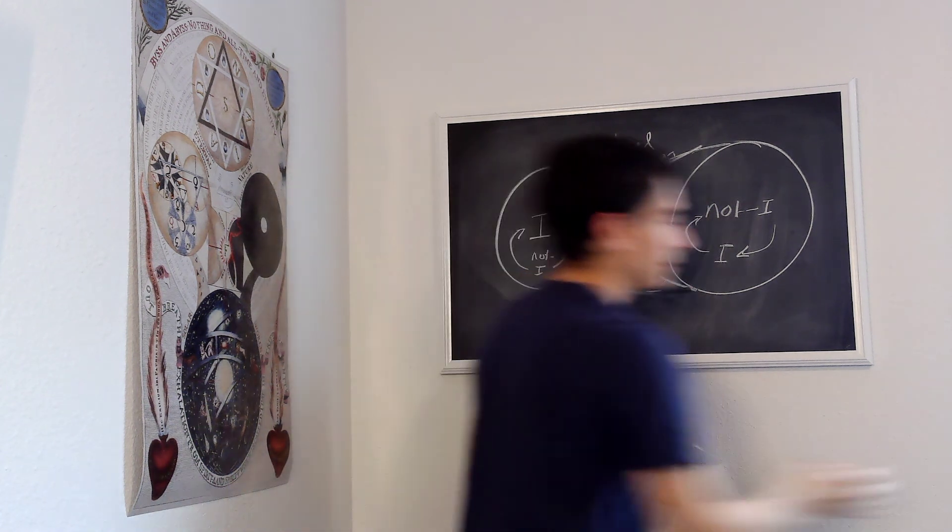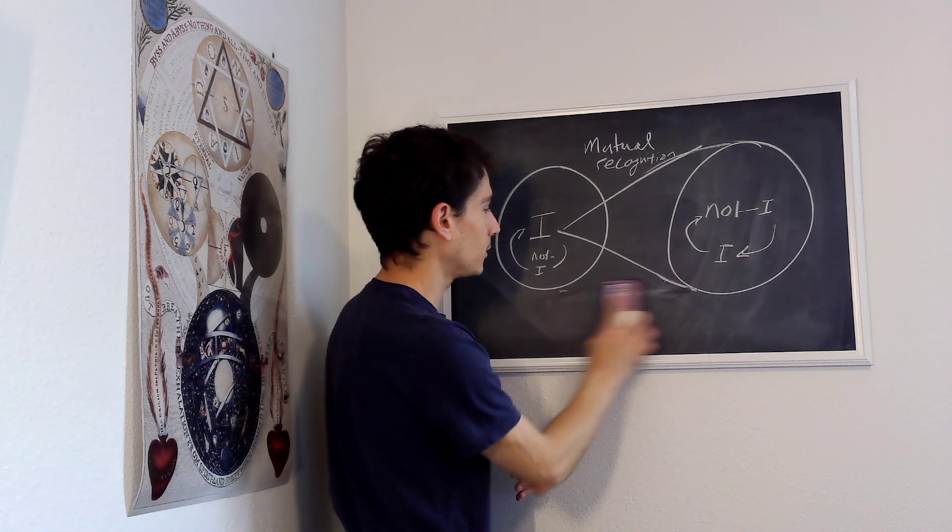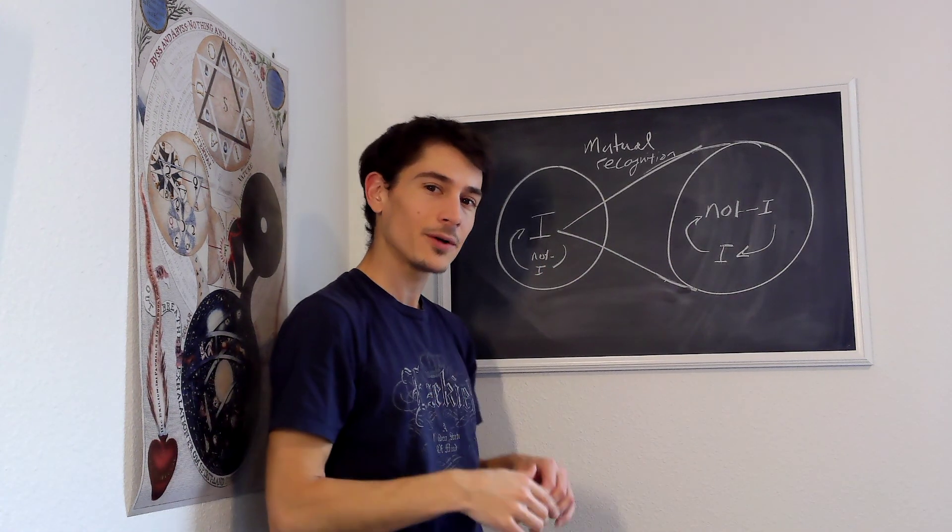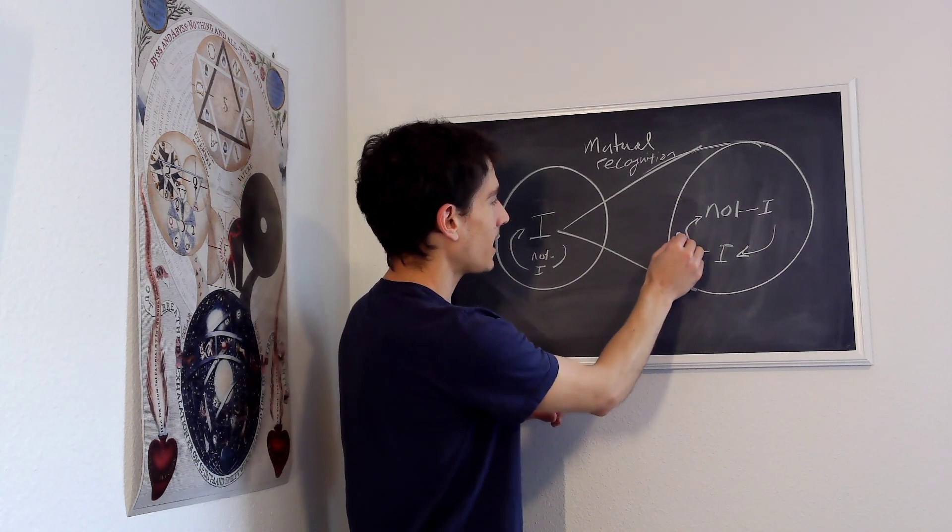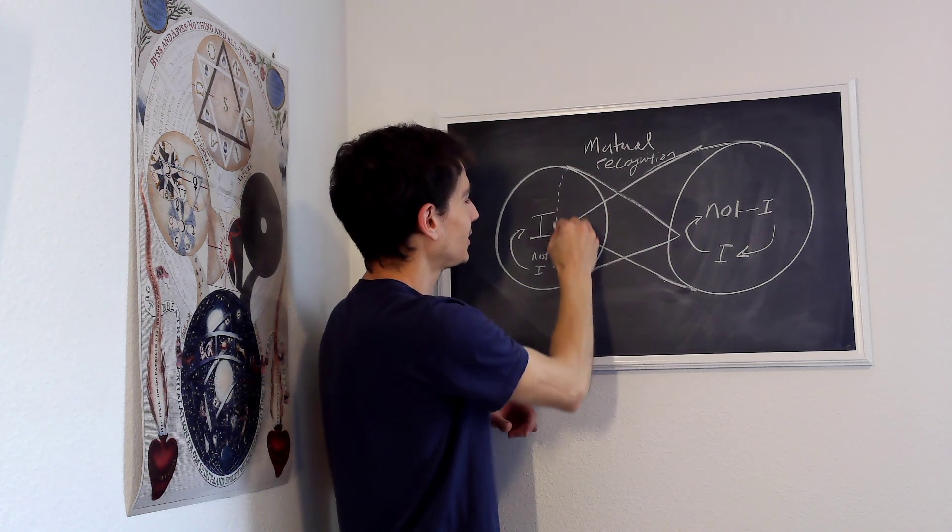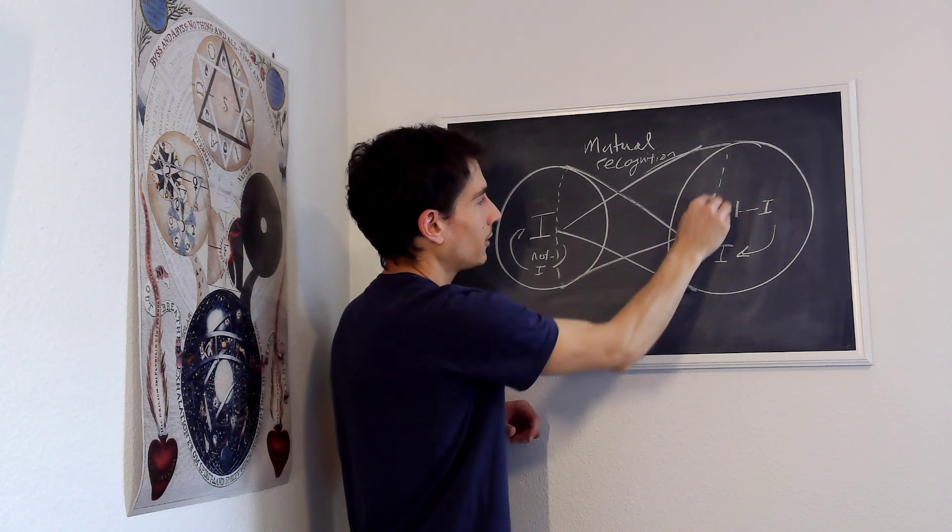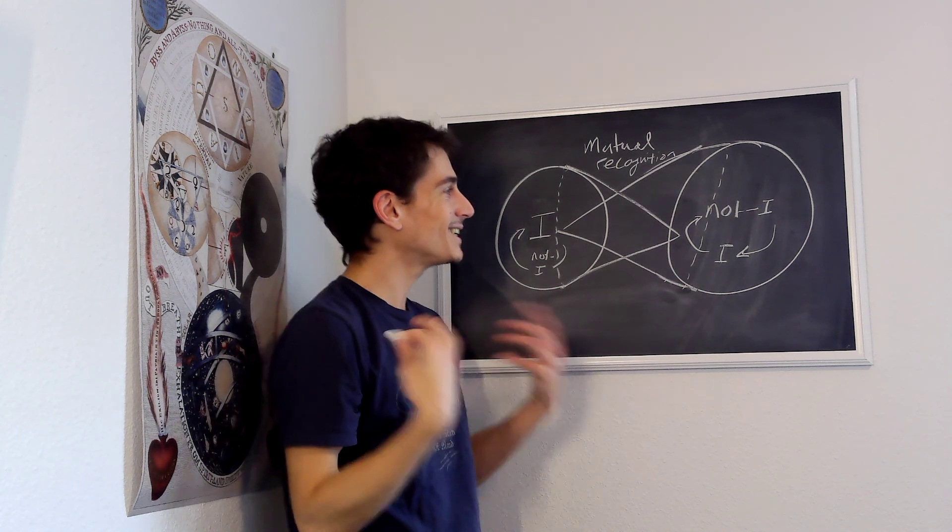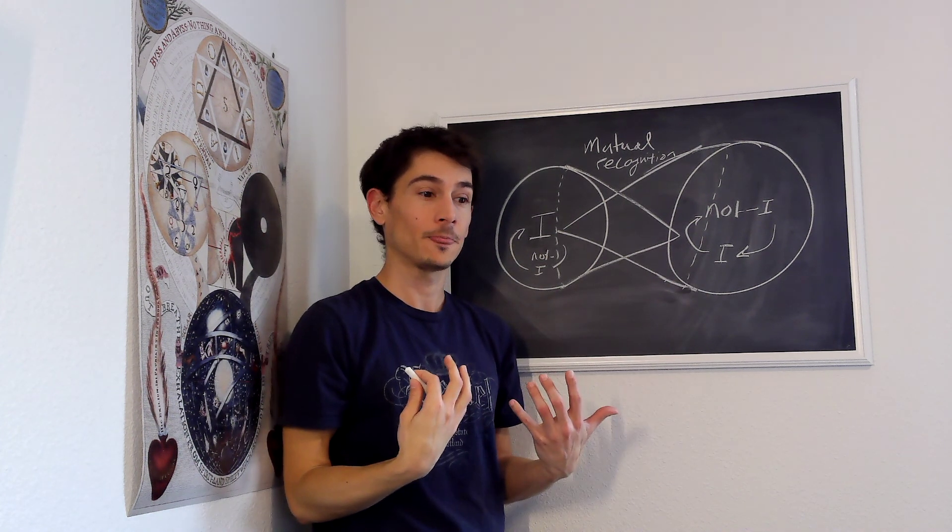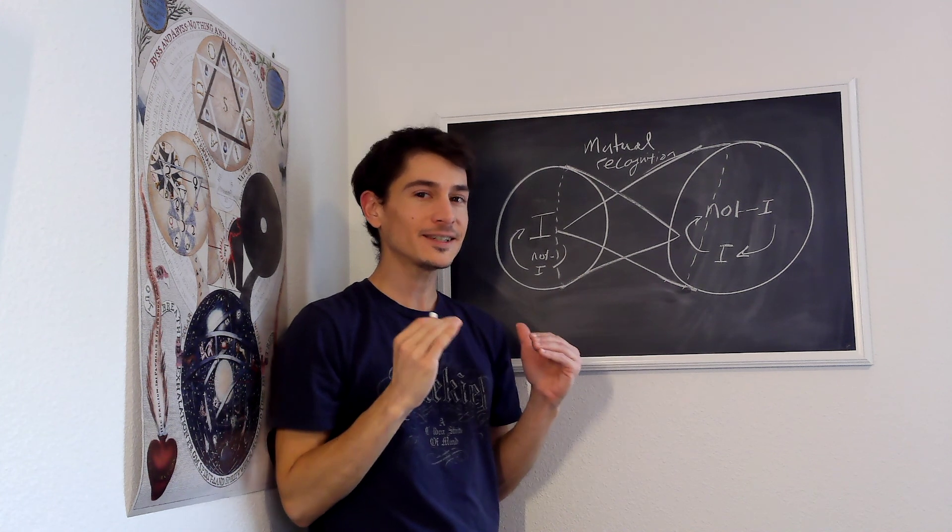Whereby for me to increase and intensify my own self-consciousness, I need the self-consciousness of others. And so there's a way in which other members of our ethical community play a constitutive role in the construction of our own consciousness. So again, Fichte is not a solipsist.